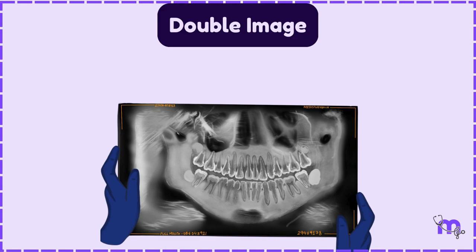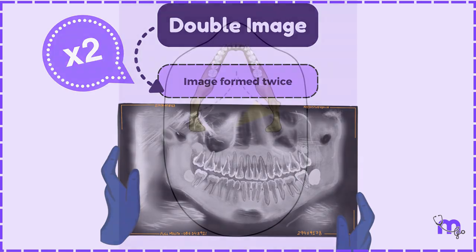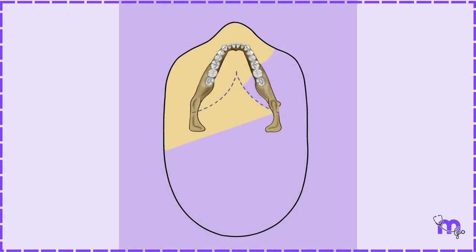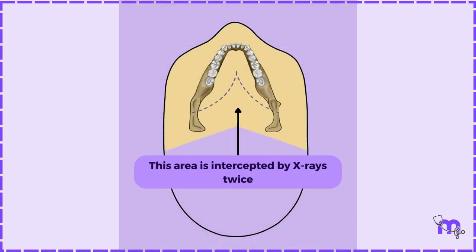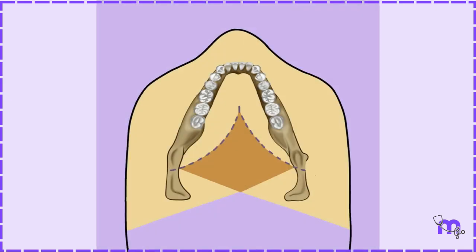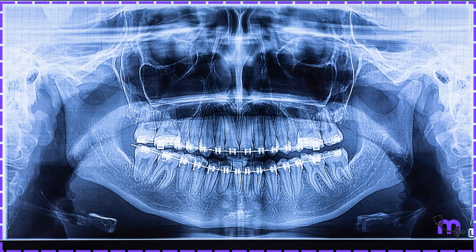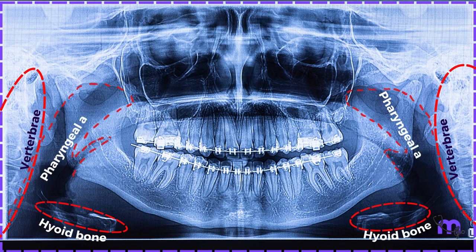Moving on to double images. As the word suggests, an image is formed on the radiograph twice. If the X-ray intercepts the structure twice during its rotation, then the image appears twice on the film. Therefore, all the objects posterior to the arc of the center of rotation, such as the vertebrae, hyoid bone, pharyngeal airway, and the epiglottis, form double images.